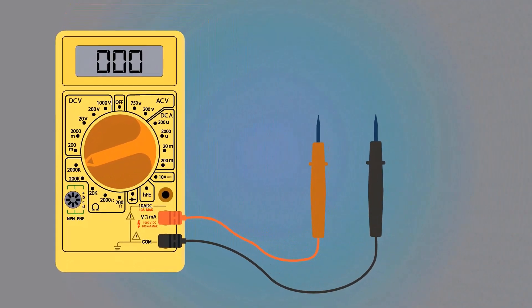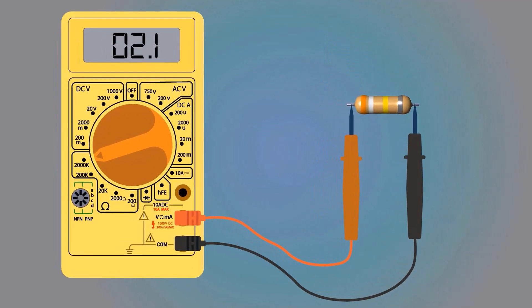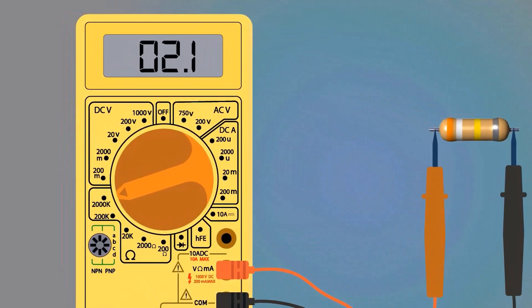Take a resistor whose value we need to measure and connect the probes. The meter display shows a resistance value of 0 — if we get 0 in the beginning, it means our resistance value is not in the current range. We need to change the resistance range with the selector switch. We have now selected 200K.